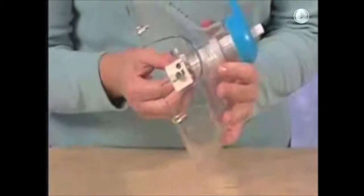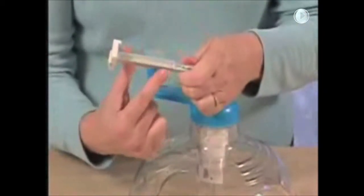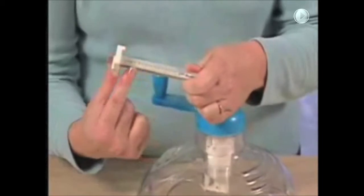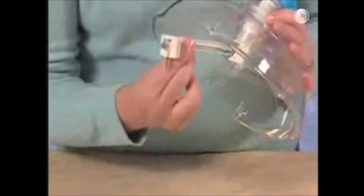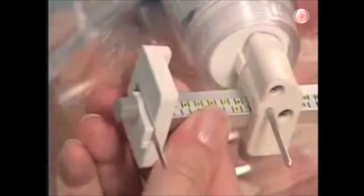To determine the diameter of the circle to be cut, loosen the knob and find the scale on the side of the beam. Use this scale to set the diameter of the circle to be cut.